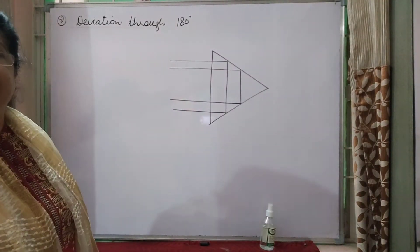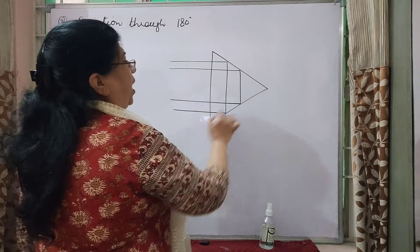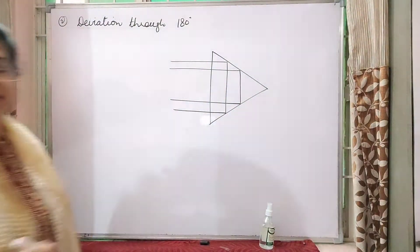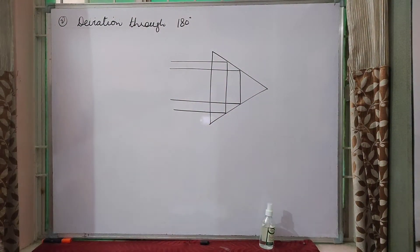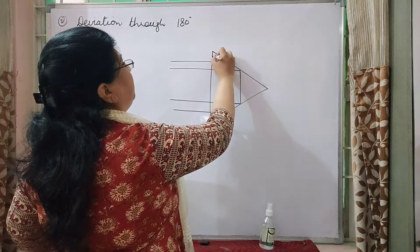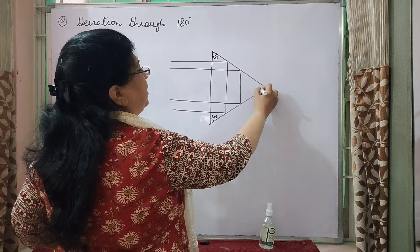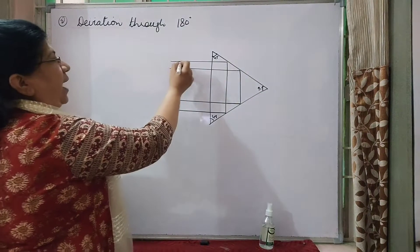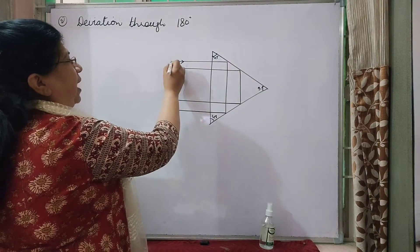Now deviation through 180 degree. Okay. We have kept our prism in this way. Right. 45 degree. The prism angle is 90 degree. Okay. So the light ray coming here. This is your object.